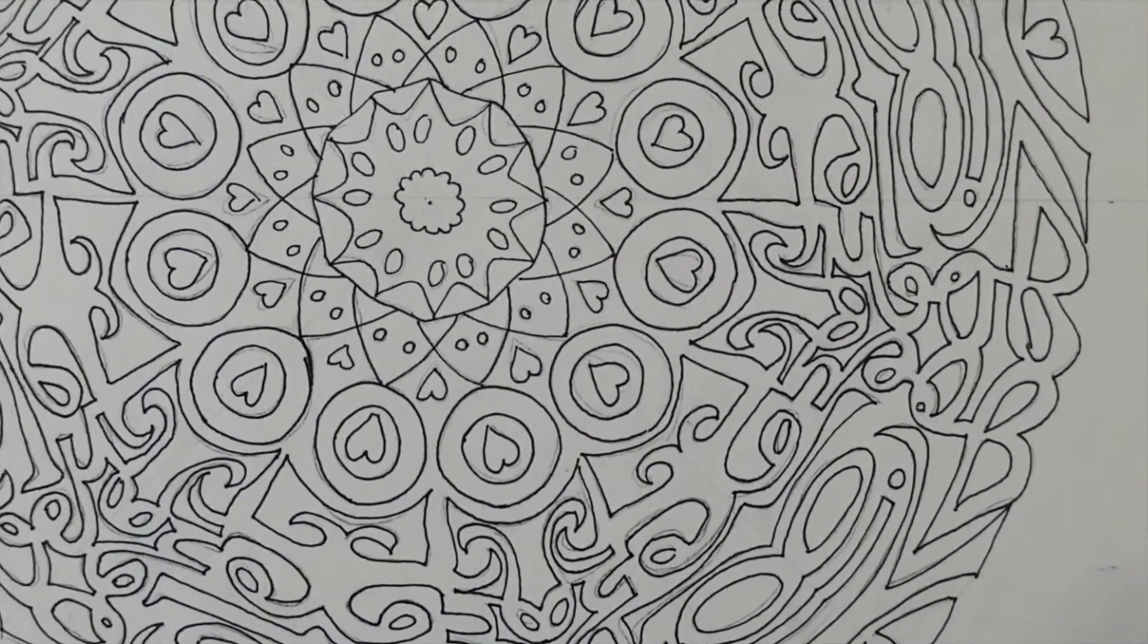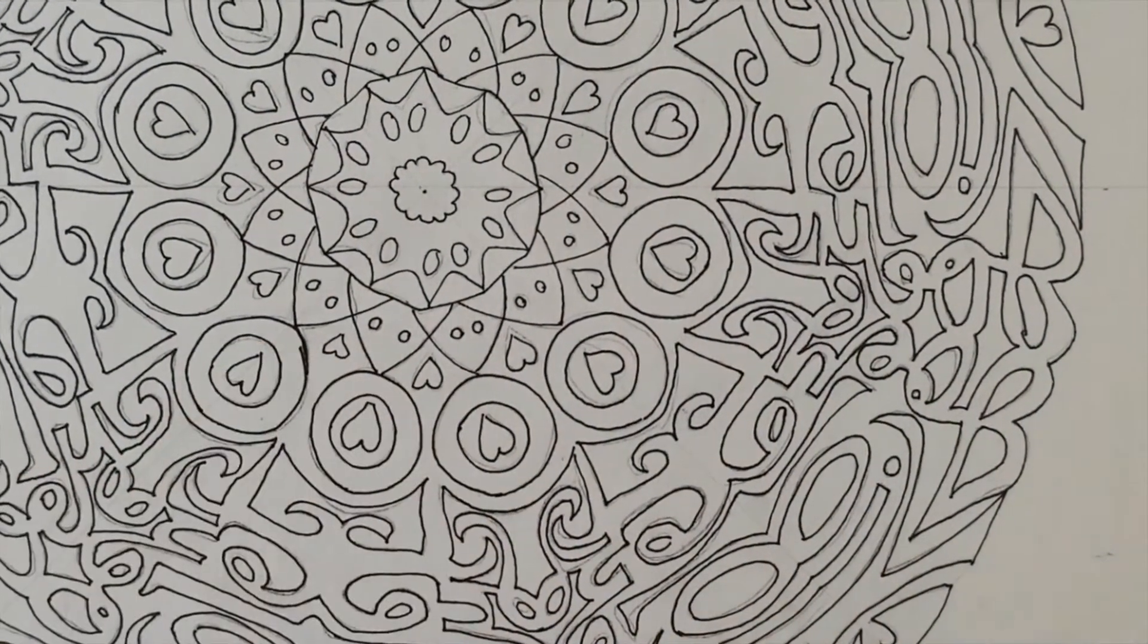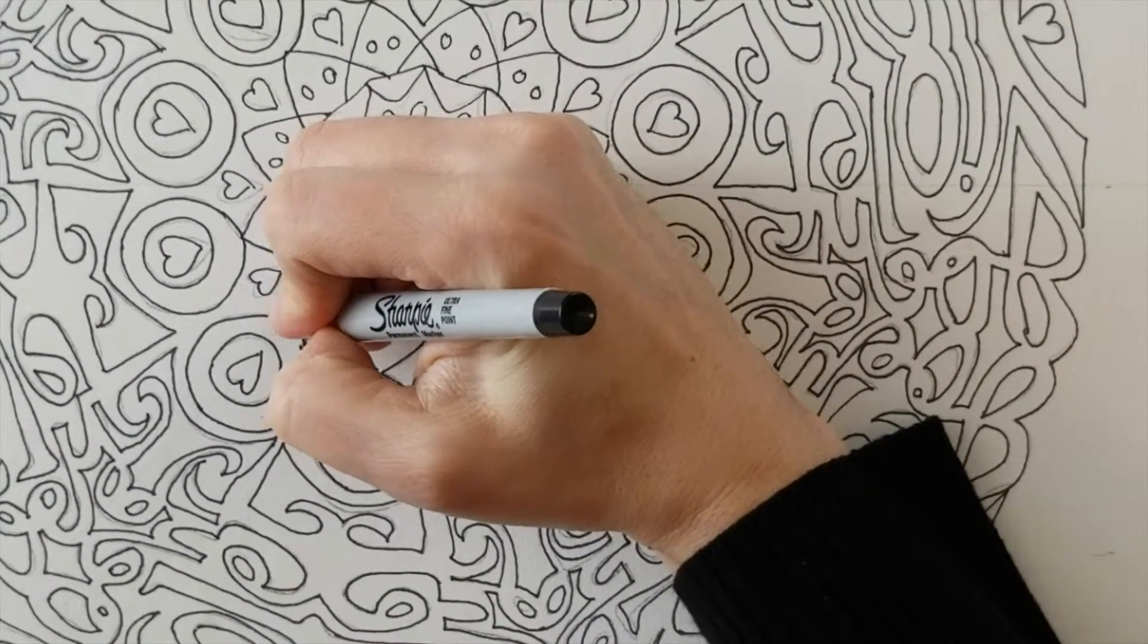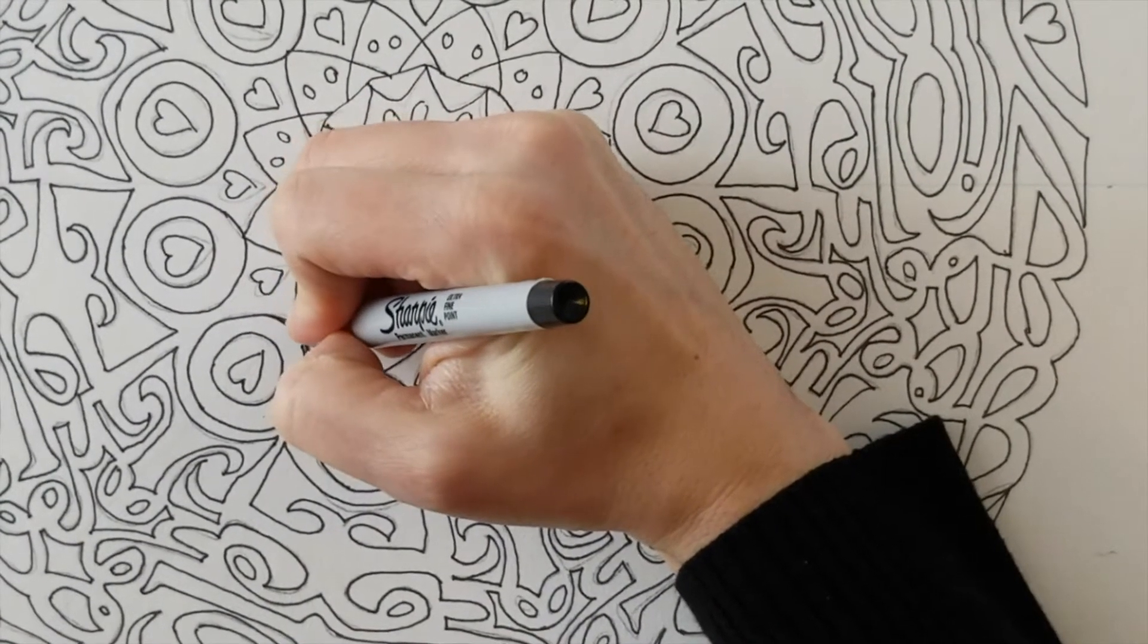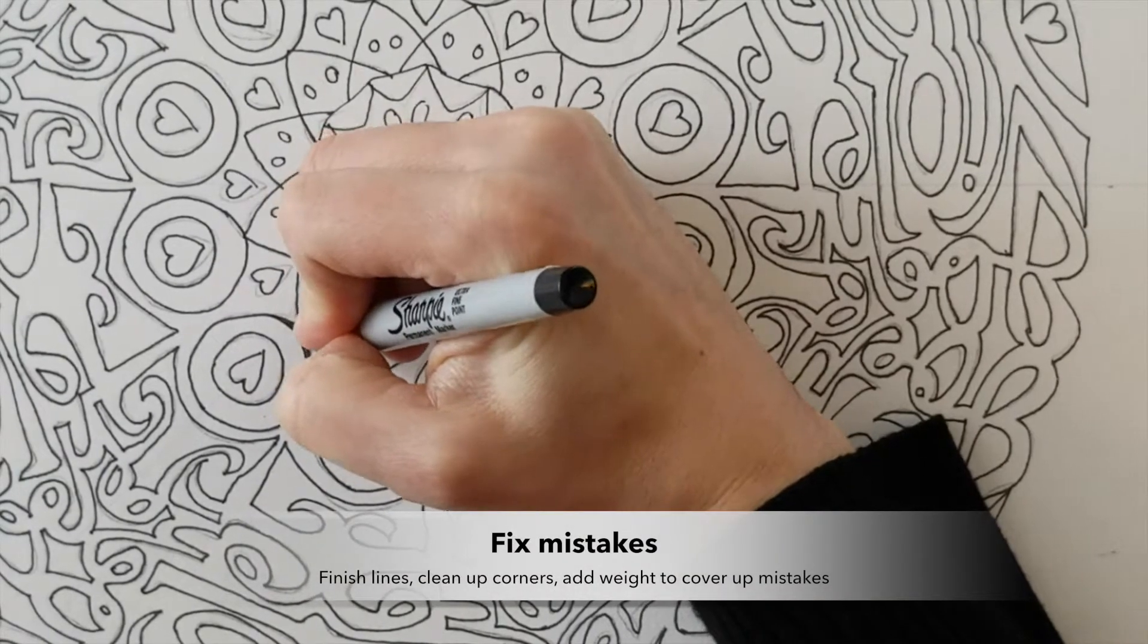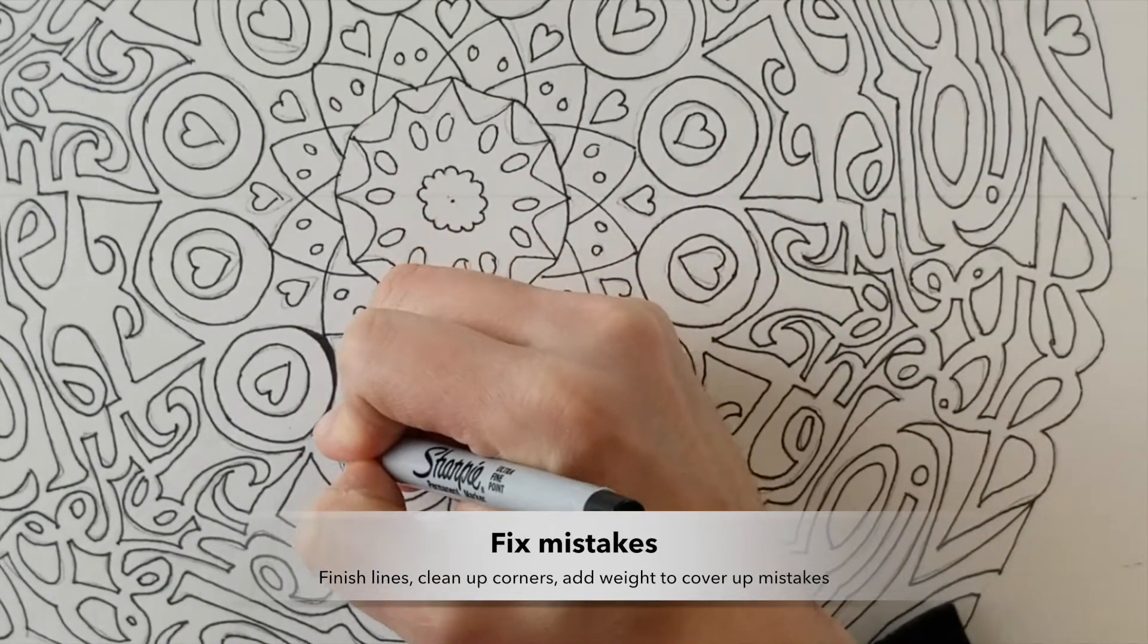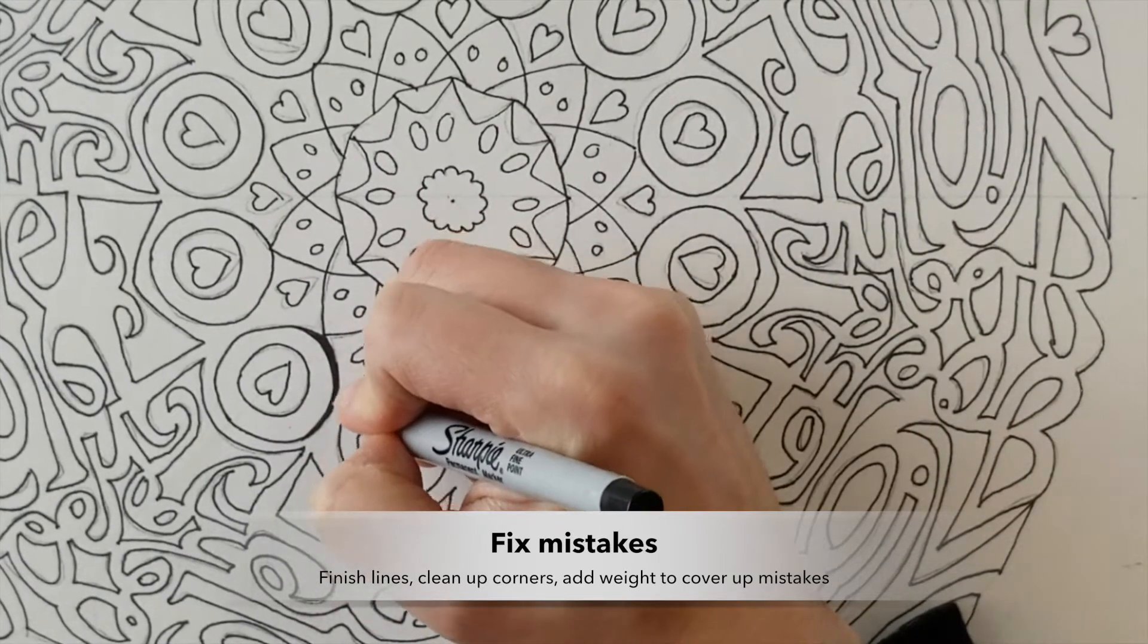Okay, so here, what can I do to fix that little mistake? One thing I can do is make my line a little bit thicker, so I'm just gonna build up a little bit of weight there, and I can make my whole circle thicker.